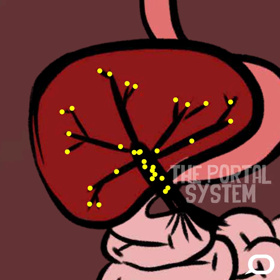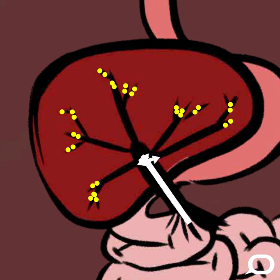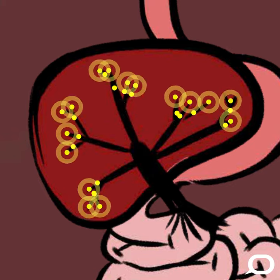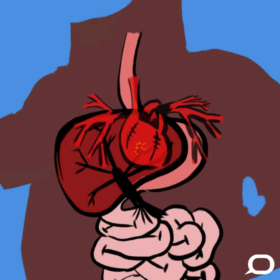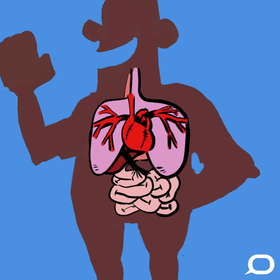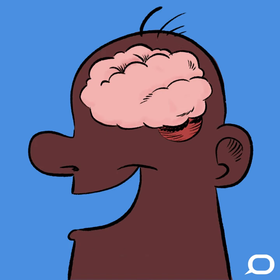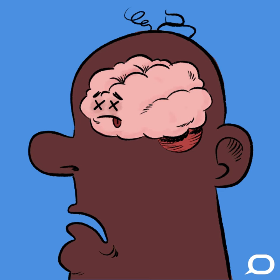Everything you eat or drink that's absorbed through the digestive tract into the bloodstream goes to your liver first, via a special system of veins called the portal system. Within the liver, the portal veins empty into a series of small channels that act like an exchange network, and some ethanol will be metabolized or broken down on the first pass through the liver. The rest is carried with the blood to the heart, through to the lungs for oxygenation, before being taken back to the heart and then pumped out through the arterial system to all organs in the body, including the brain.